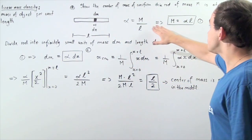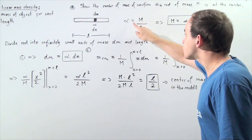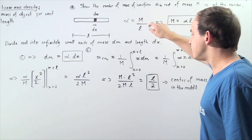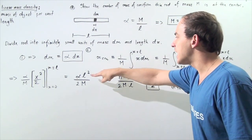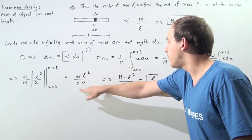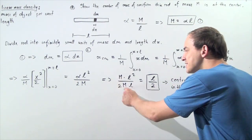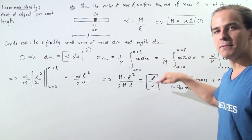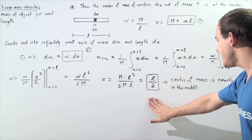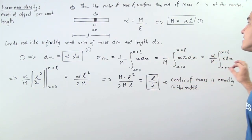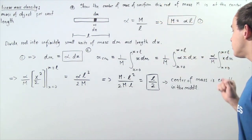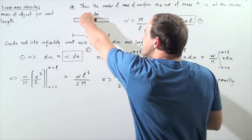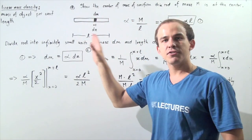Now we can take this equation and substitute alpha equals M divided by L into the result. So we get M divided by L, multiplied by L squared divided by 2M. The M's cancel and one of the L's cancels, and we're left with L divided by 2. So the center of mass of our uniform thin rod is exactly in the middle — it's L divided by 2, exactly at the center of the rod.